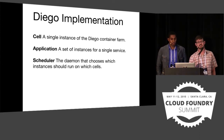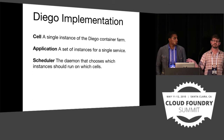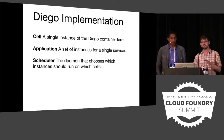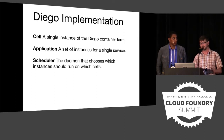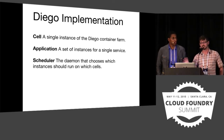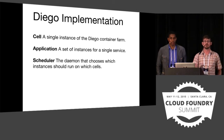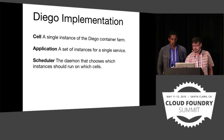An application is a set of instances running in containers across the cell cluster. The scheduler is a daemon that keeps the current state and desired state of the system in its head. When it notices a discrepancy, it schedules work so that whatever isn't running starts running and whatever shouldn't be running is stopped.